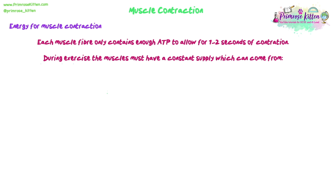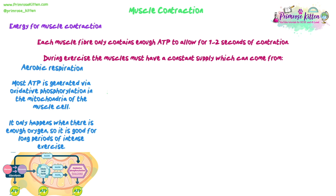Each muscle fibre only contains enough ATP for about one to two seconds of contraction, so during exercise muscles must have a constant supply. The main source is aerobic respiration — most ATP in muscles is generated via oxidative phosphorylation in the mitochondria of the muscle cells. This only works with enough oxygen, so it's suited for long periods of exercise. Slow twitch muscle fibres in particular rely heavily on aerobic respiration for their ATP.